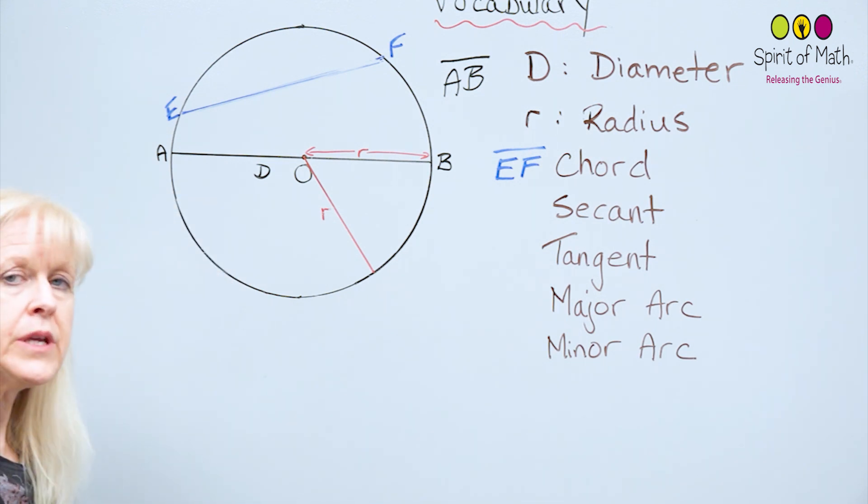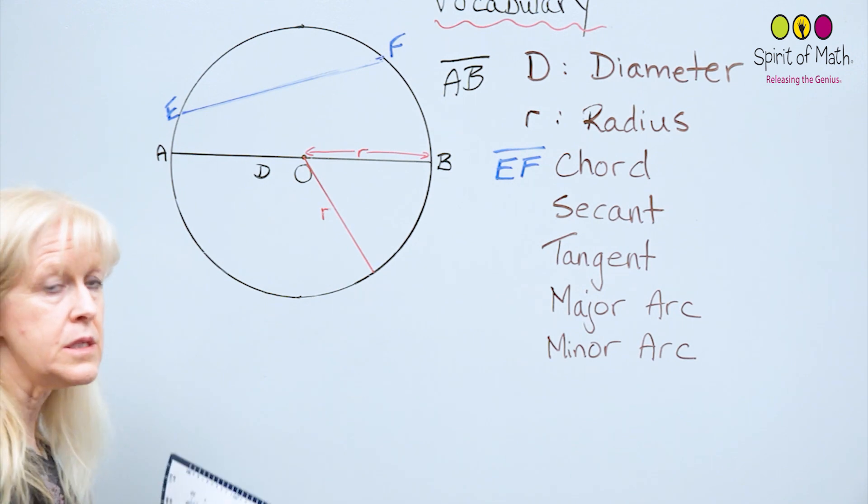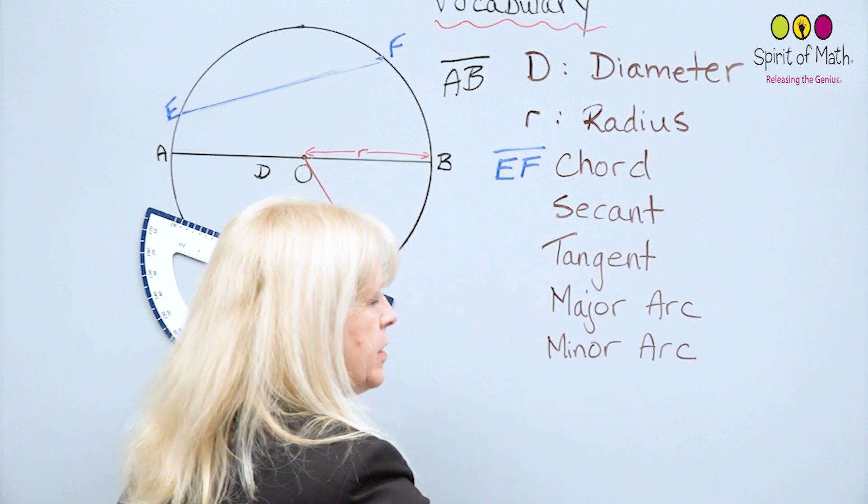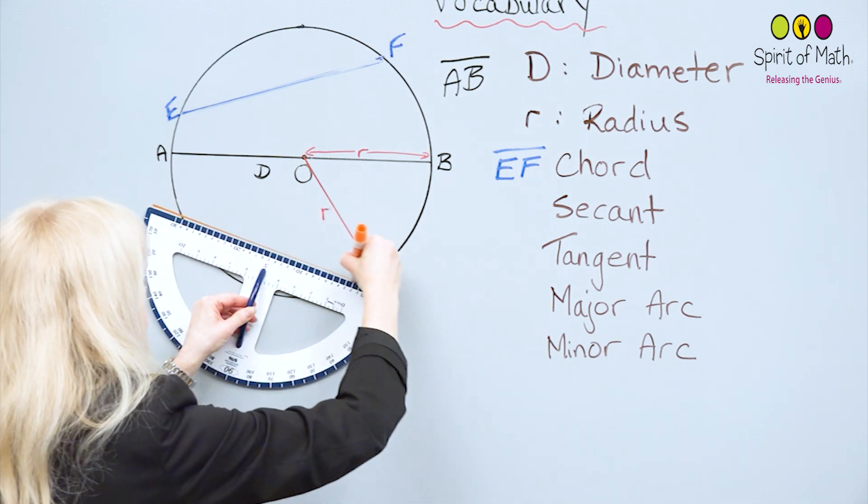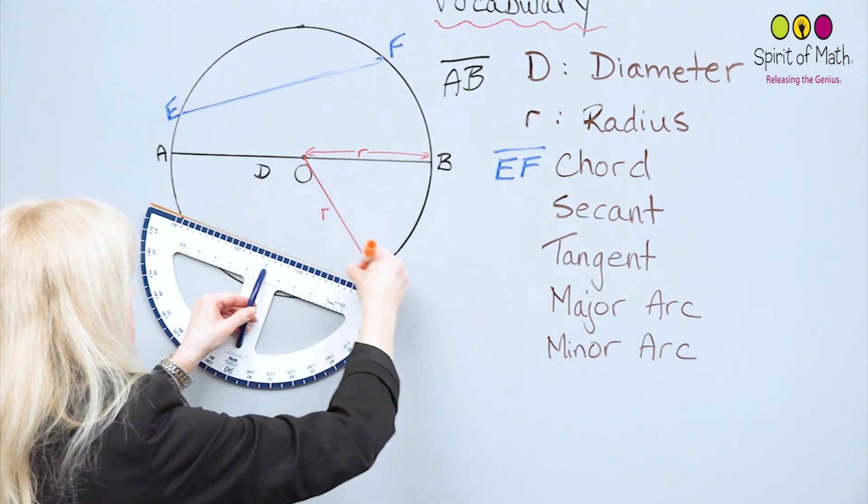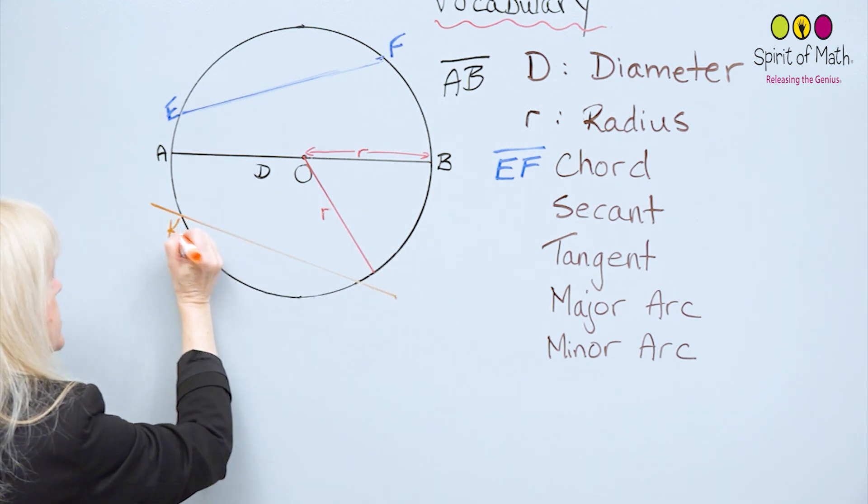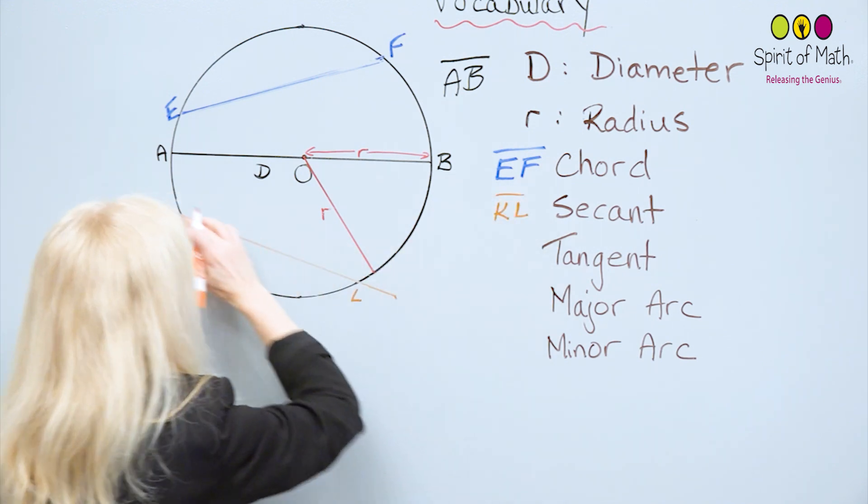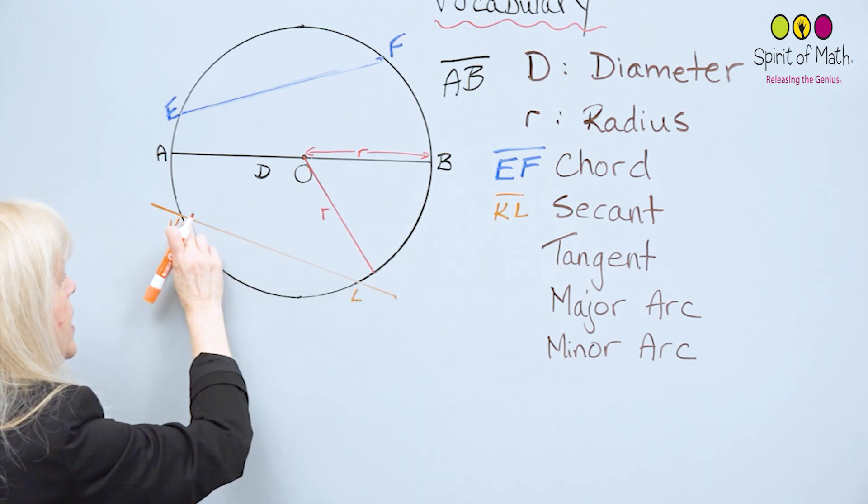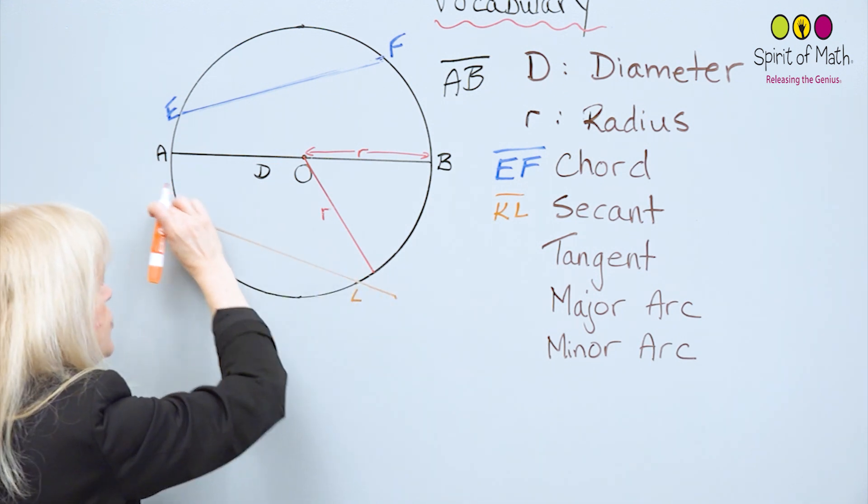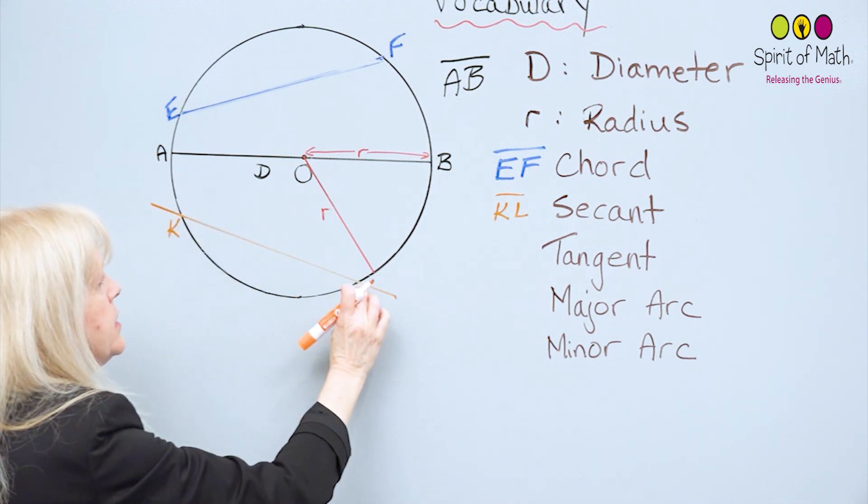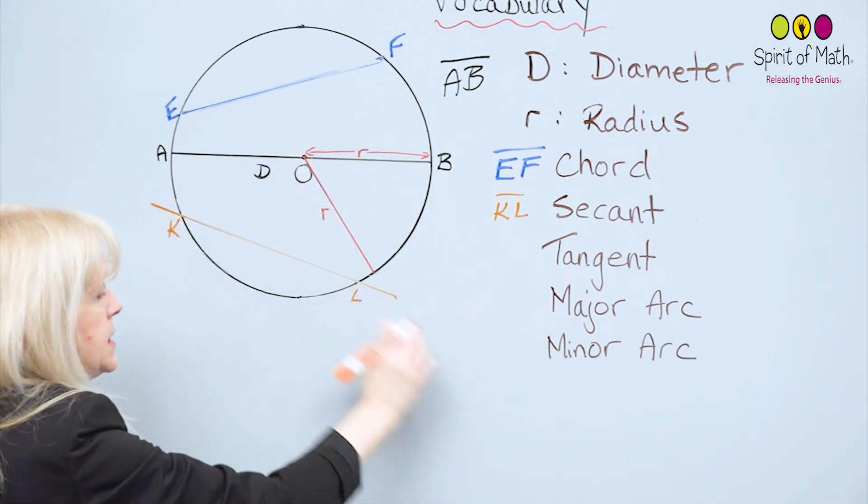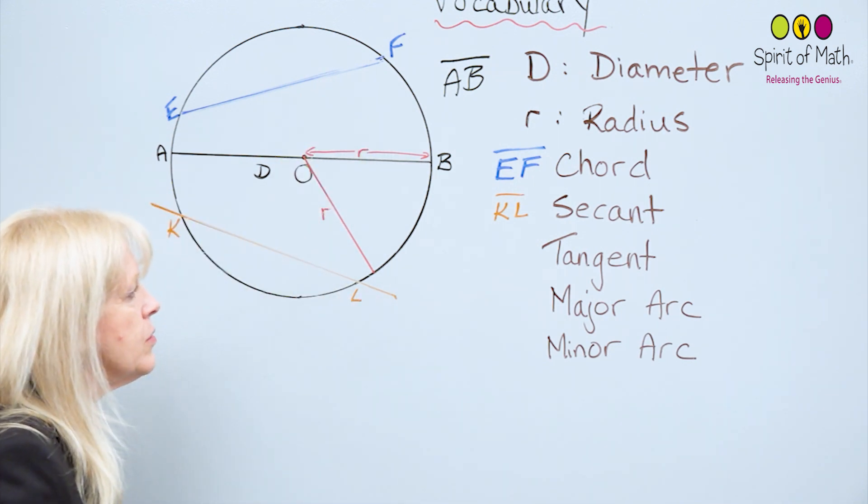Now, the secant is very similar to a chord, except a secant goes beyond it. I'm going to do another color here so you can see the secant is this color that goes right through. Notice the secant, we can still label this. I'm going to label this KL here, and that secant actually goes right through. So you have the chord KL, and you have a secant that goes right through. This is really important that it doesn't just end on the circle. EF is for sure a chord. This is a secant that just cuts right through.